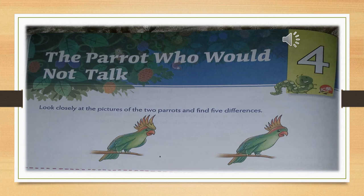The first difference is the crown of the parrot. The second one is the second leg of the parrot. The third one is the number of leaves in his crown. The fourth one is the shape of the wings — in the right side, there is no wing. And the last one: the beak of the parrot is smaller on the left than the right one. If you can find some more, try it.